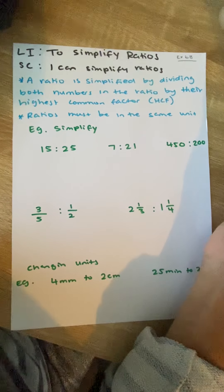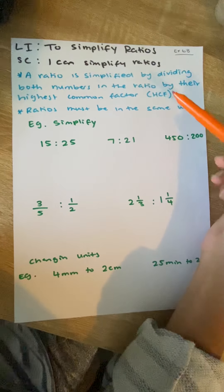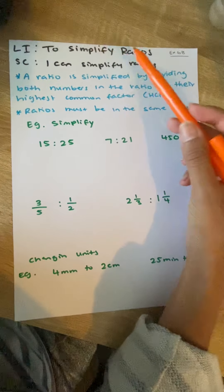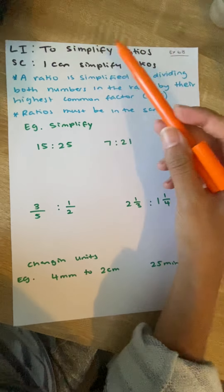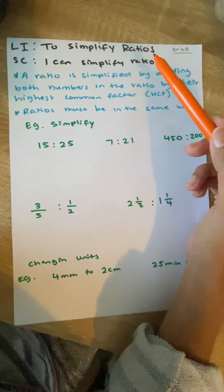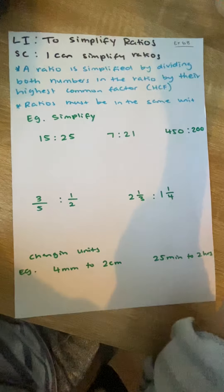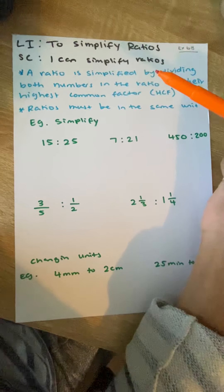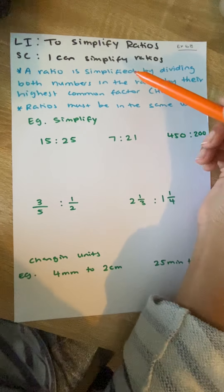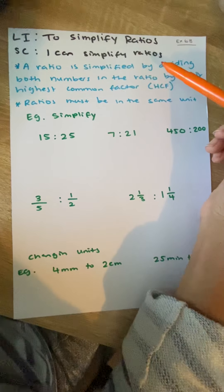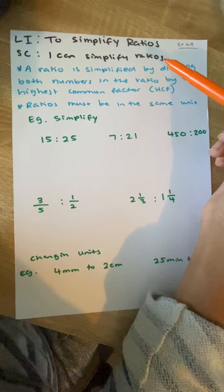Hello year 8, so the next thing that we are going to be looking at is how to simplify ratios, putting them in their simplest form. And this is going to take a lot of work from what we did with our fractions unit, so knowing our multiplication and our division, it's handy to have a multiplication grid with you. So by the end of the session, we want to be able to simplify our ratios, make them the smallest possible number that they can be.